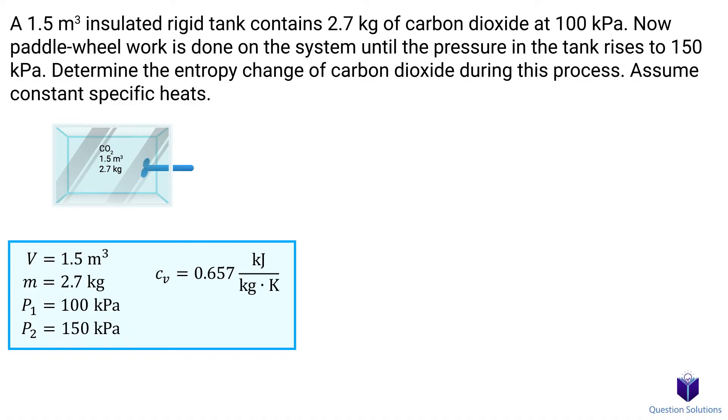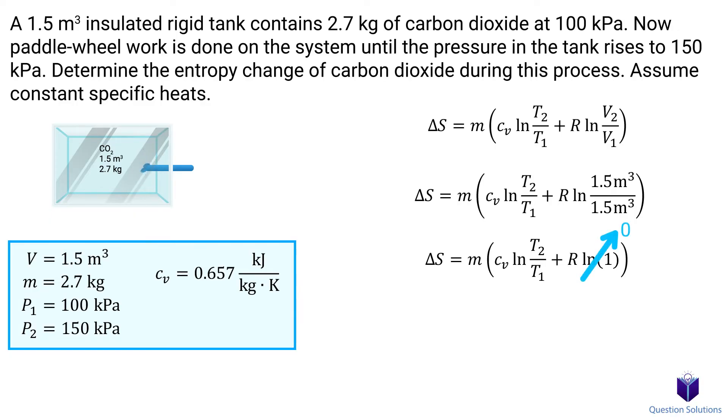To find the entropy change, we can use this equation. Here, the volume stays the same, so that means this part actually becomes zero, because the natural log of one is zero. So what we're left with is just this part.